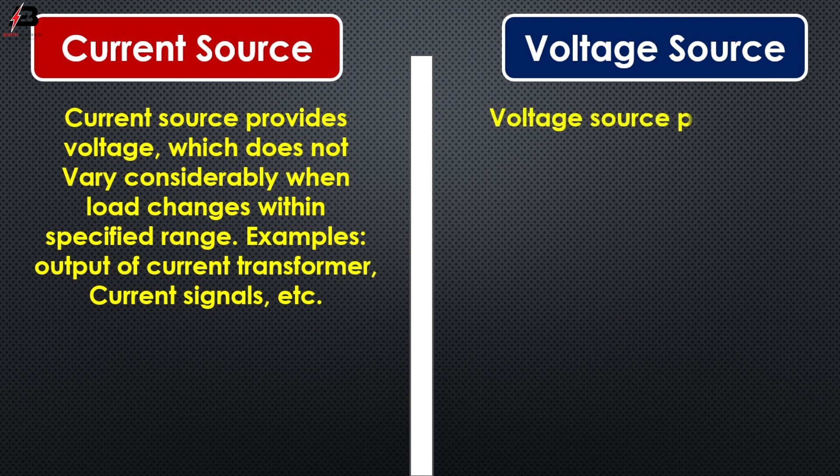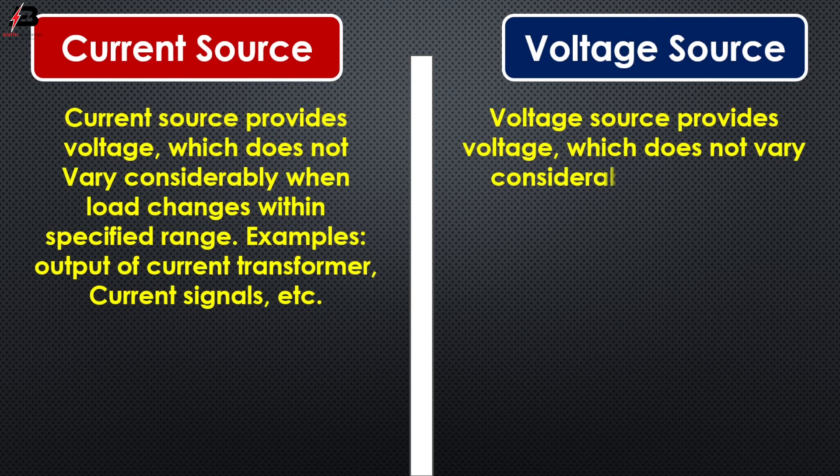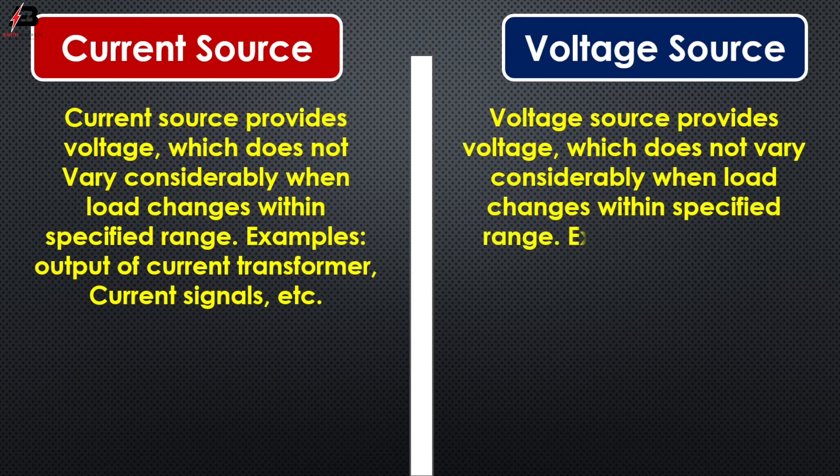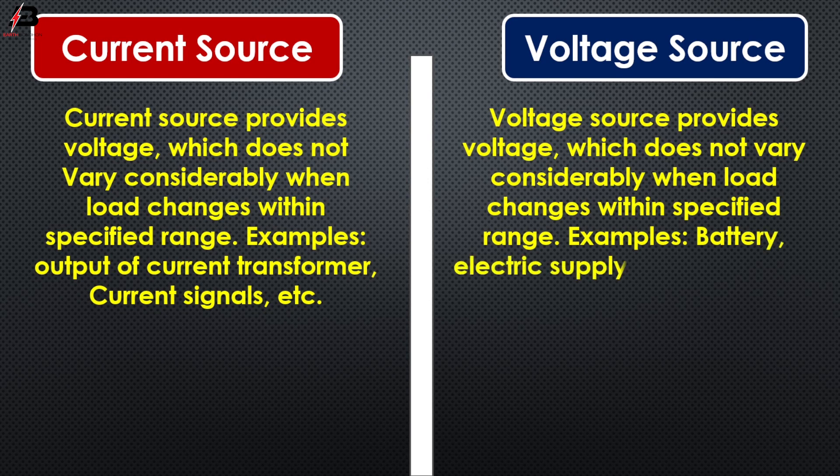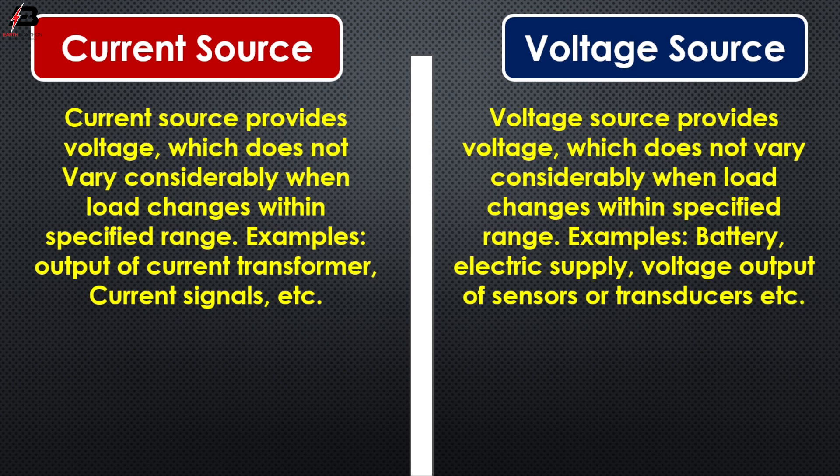Voltage source provides voltage which does not vary considerably when load changes within specified range. Examples: battery, electric supply, voltage output of sensor or transducer, etc.